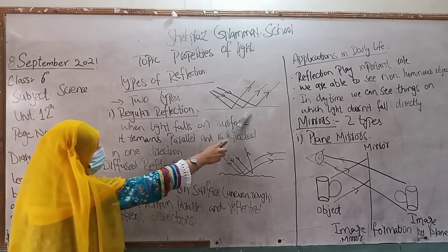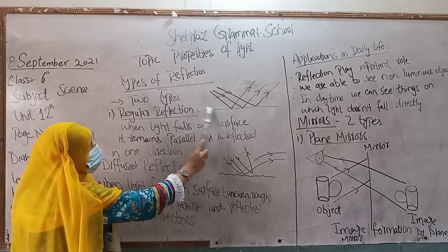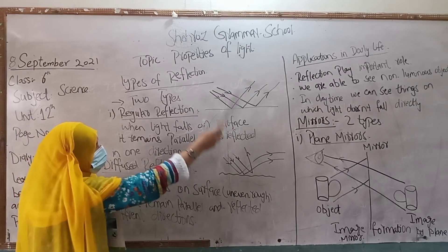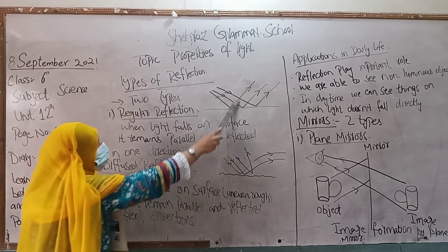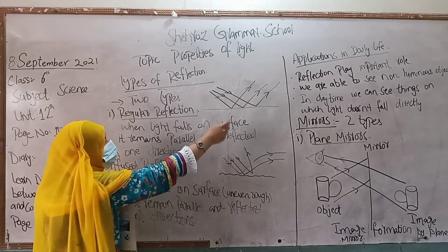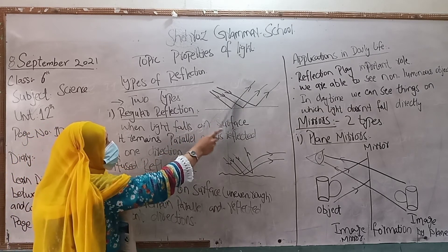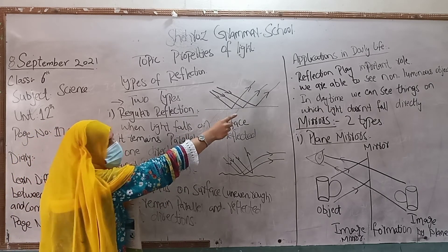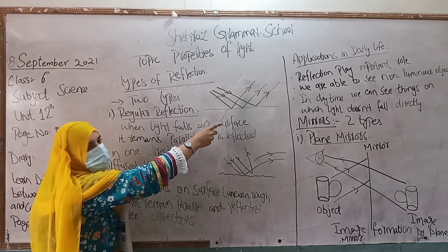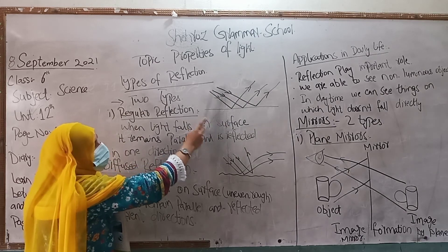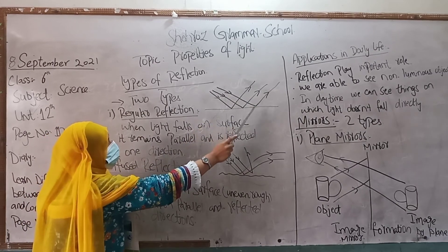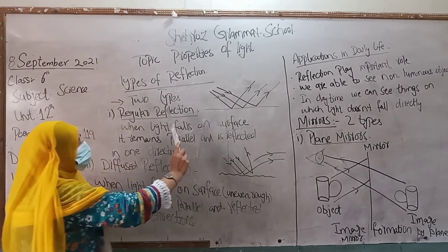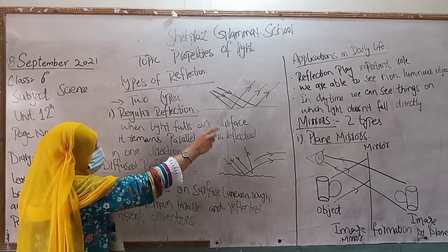This type of reflection is called regular reflection or specular reflection. This means that when light rays fall on such a surface, they all reflect in one single direction. This is regular or single reflection.